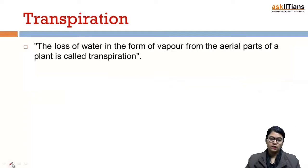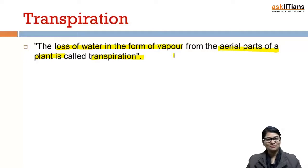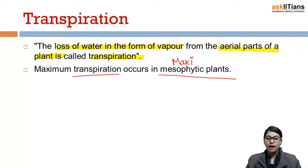From this we can easily form the definition of transpiration. The loss of water in the form of vapor from the aerial parts of a plant is called transpiration. In mesophytic plants, transpiration is maximum — keep this point in mind.